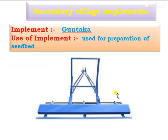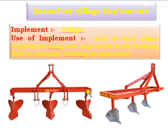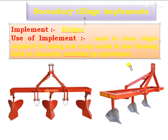Next is the guntaka, which is especially used for the preparation of the seed bed only, and is tractor-operated. Next is the bund former, which is used for making bunds around the field as well as around the strip, in the border strip method, or in the irrigation furrow. Then this is the ridger, mainly used for interculture operations, making of ridges and furrows, sowing of row crops, and forming field channels.